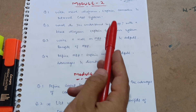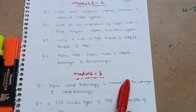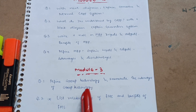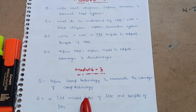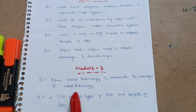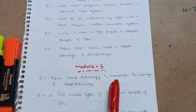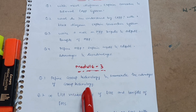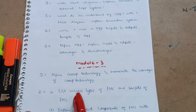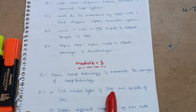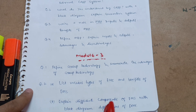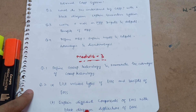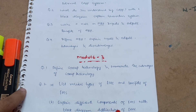Next is Module 3 — this is again a passing module. Module 2 and Module 3 are both passing modules. There are two chapters: Group Technology and FMS (Flexible Machining System). For Group Technology, focus on: define Group Technology and enumerate its advantages. For FMS, the questions are: list various types of Flexible Machining Systems and the benefits of FMS, and explain different components of FMS with a block diagram and write down the applications of FMS.